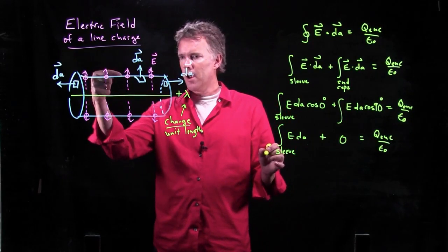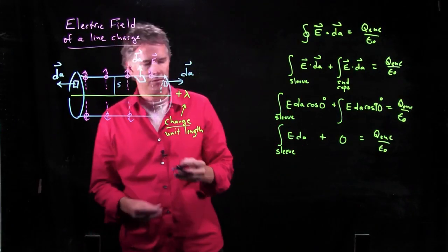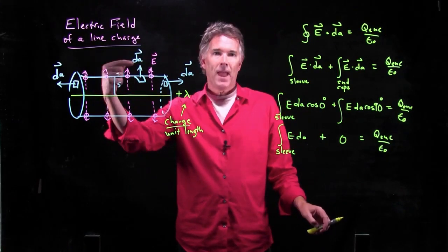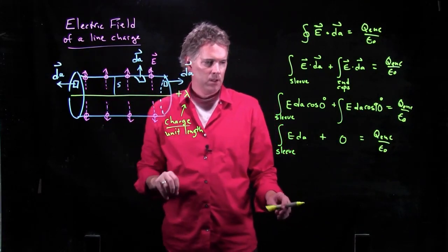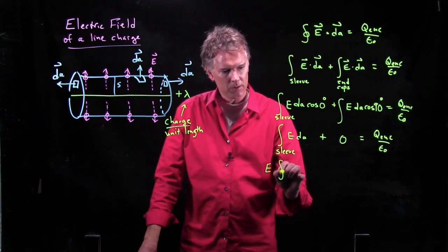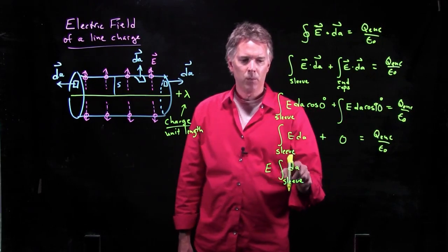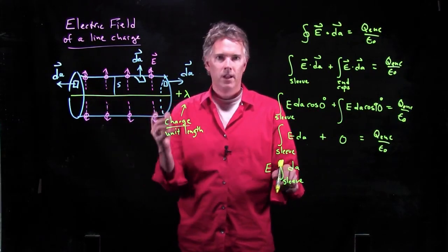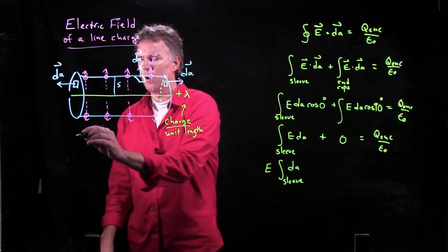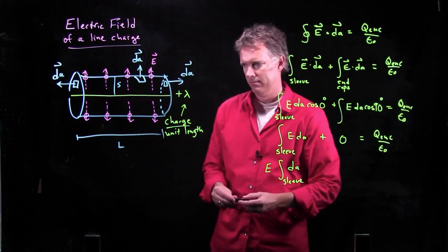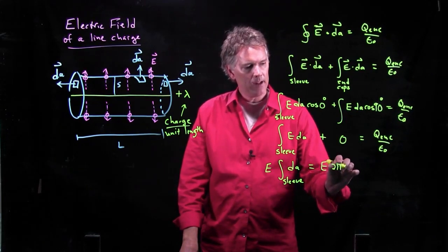E is a constant. If we are a fixed distance everywhere from that surface, and we call that distance S, then the magnitude of E has to be the same everywhere around that can, right? By symmetry, it has to have the same value. So E comes right out of the integral. E times the integral of dA over that sleeve. But we know that the area of the sleeve is very defined. It's 2 pi S times how long the sleeve is. So let's just give the sleeve a length L. What is the area of that sleeve? It is 2 pi S times L.